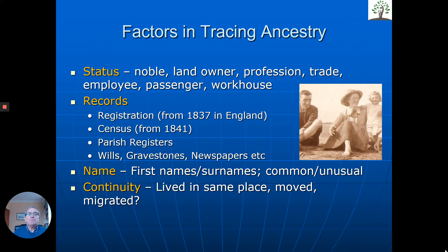What sort of records do we look at? The obvious ones are birth, marriage, and death records. Official registration started in England from 1837. The census started around that time — 1841 — taken every ten years, and it gives us a lot of information about the family: how old people were, where they were born, what their occupations were, and it really helps in bringing them to life. Before then, we're mainly reliant on parish and church registers for recording baptisms, marriages, and burials. But there are all sorts of other records such as wills, gravestones, and newspapers that we may look at.